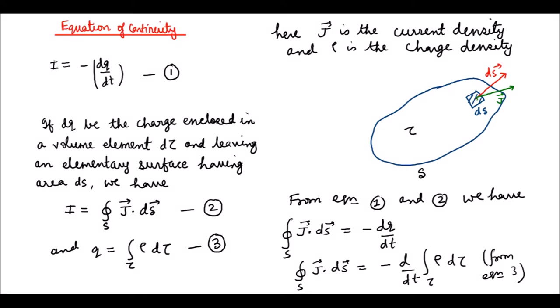If we hold the surface S fixed in space, the time variation of the volume integral must be solely due to the time variation of rho. Thus we can write integration of J dot dS equal to minus integration d rho/dt d tau over this entire volume tau. Let this be equation four.